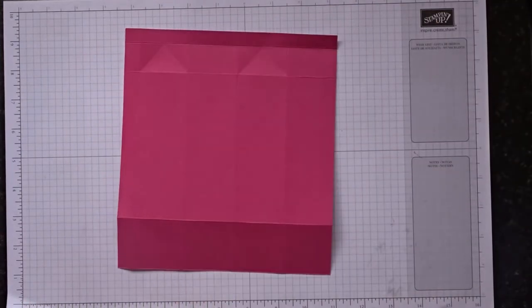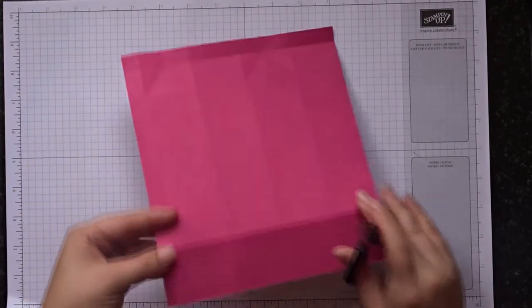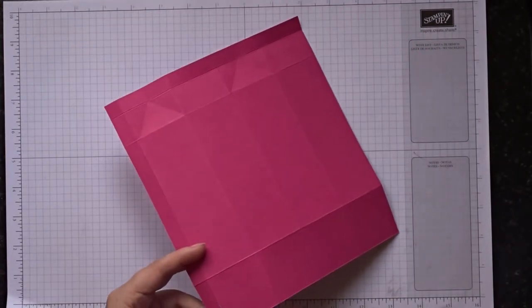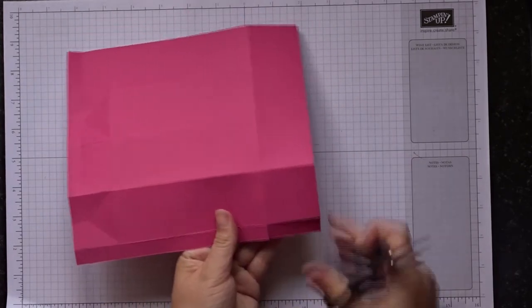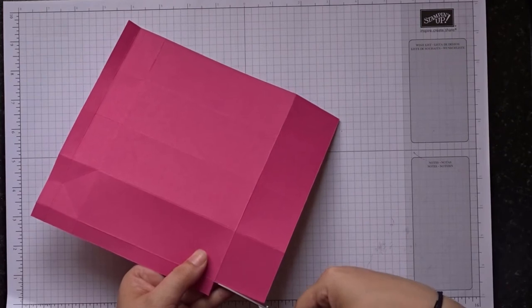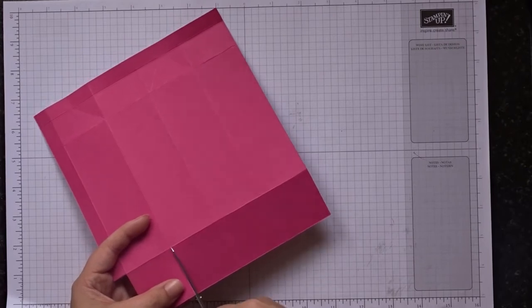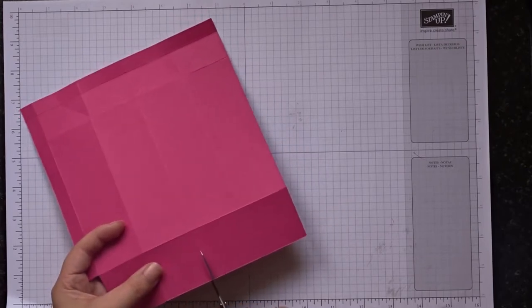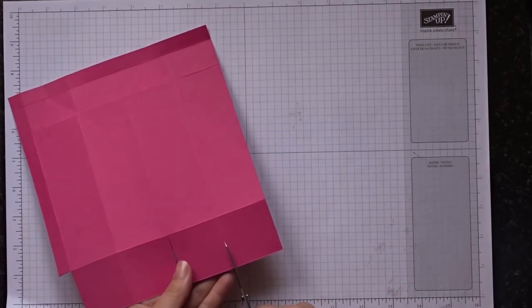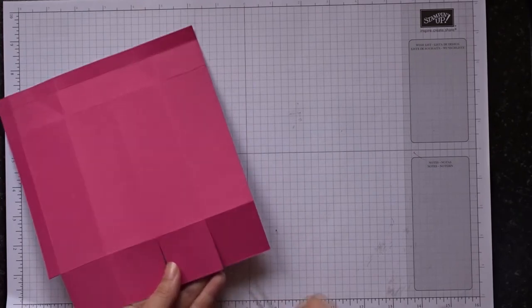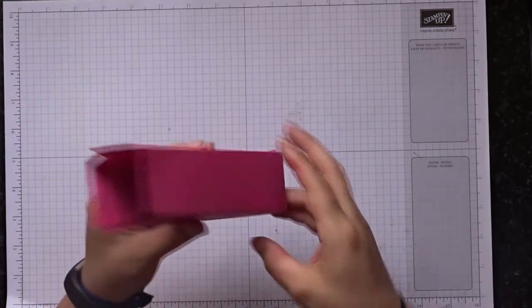So now we need to do a bit of trimming. We're going to leave all of these sections except this bottom one here. So this bottom rectangle we need to cut off. And then all we need to do is cut up each of these bottom score lines. That's just to create the base of your box. As you can see, if I quickly put it together, they are folding.